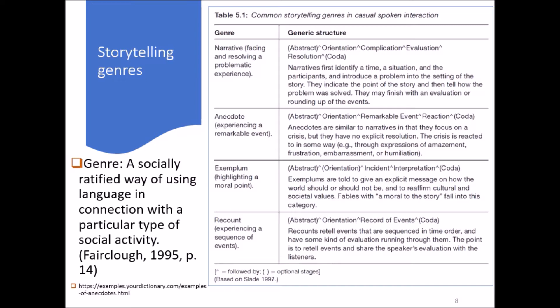The first type of storytelling genre is narrative. The other one is anecdotes, then exemplums, and recounts. First, a narrative—a narrative is a kind of storytelling in which we face and resolve a problematic experience.